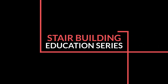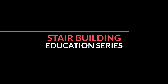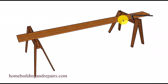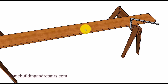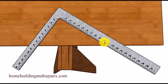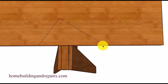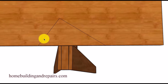Welcome to another stair building education series. In this video I am going to provide you with a couple of examples that could affect the length and layout of your stair stringers. If you have a framing square that is bent and no longer square, this can actually affect the length of the stair stringer as well as creating steps that might not be perfectly level or risers that won't be perfectly plumb.